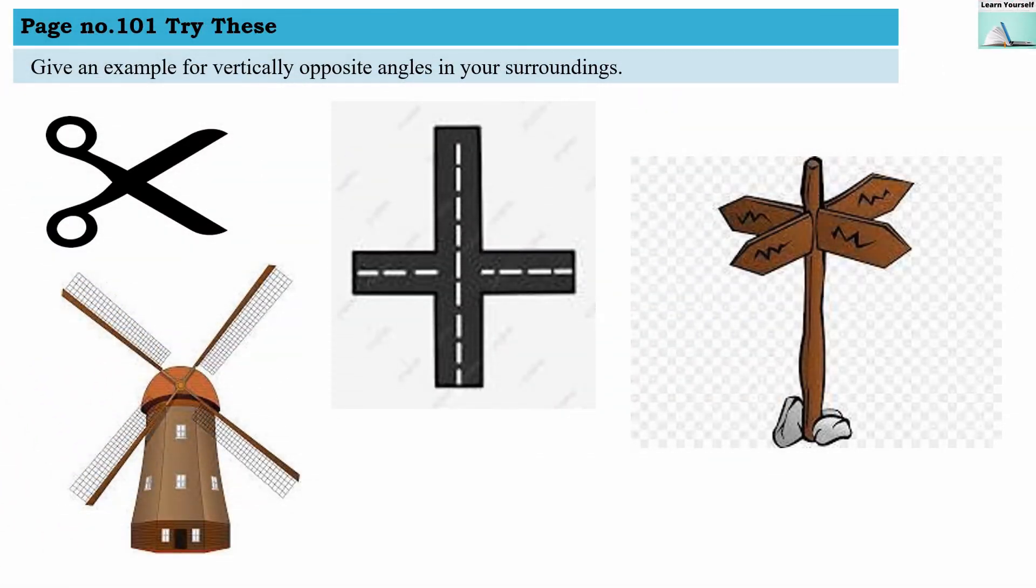Page number 101, try this. Give an example of vertically opposite angles in your surroundings. So here I have given some examples. You can take a pair of scissors where these angles are vertically opposite to each other, also a windmill where these angles are vertically opposite to each other, a crossroad where these angles are vertically opposite to each other.